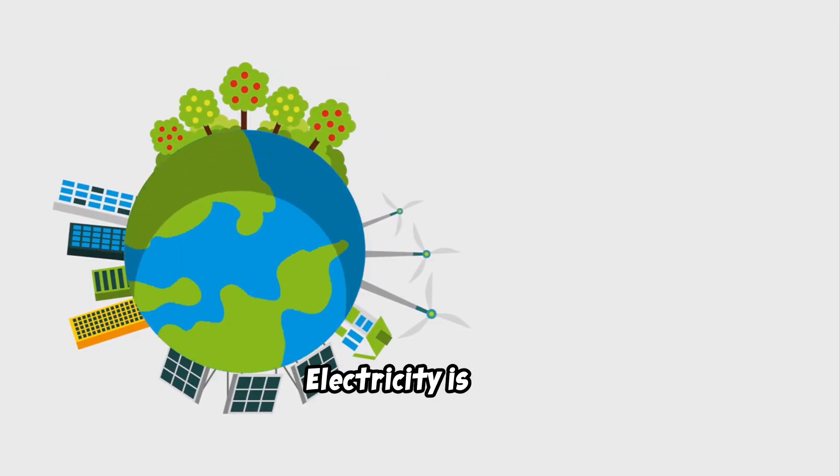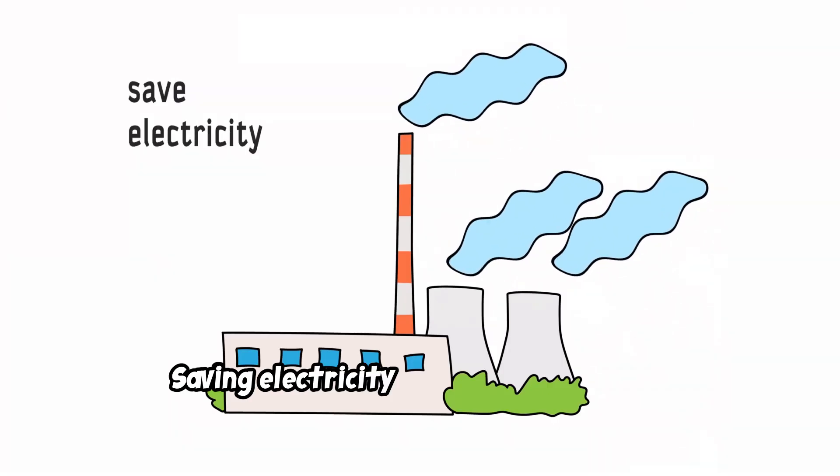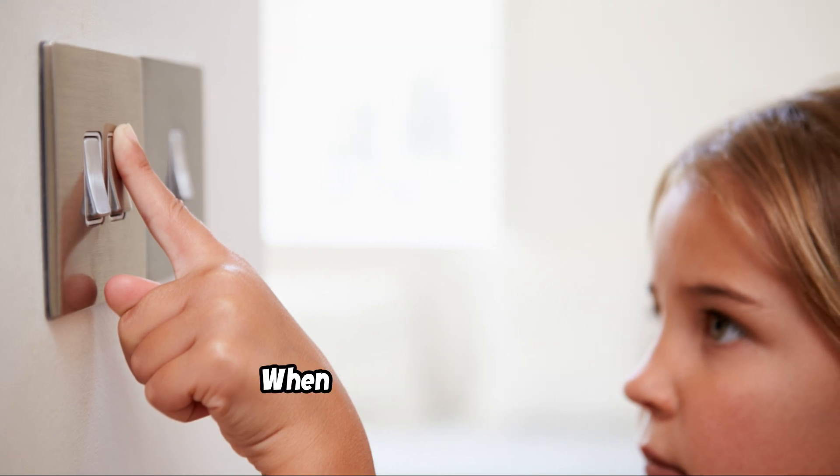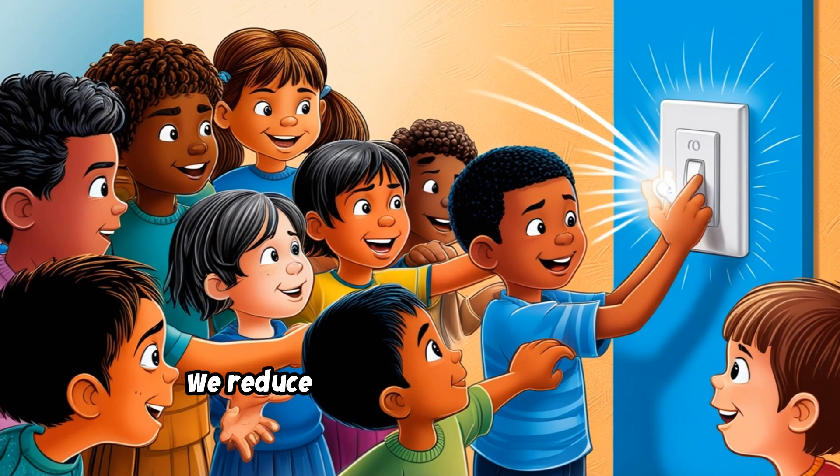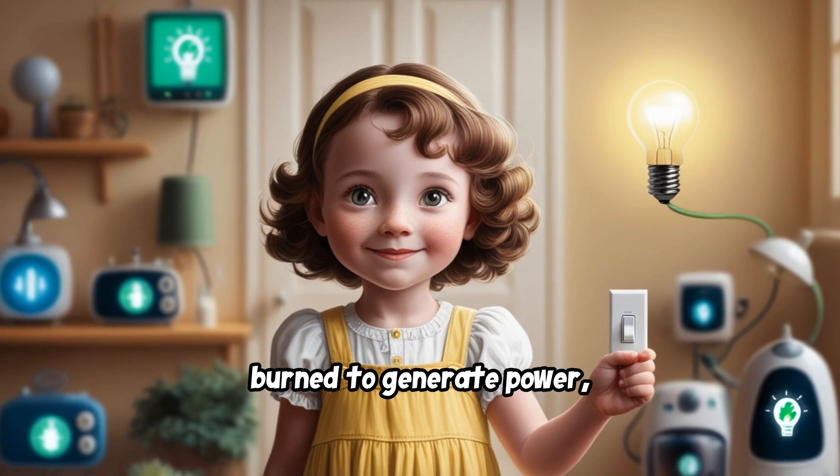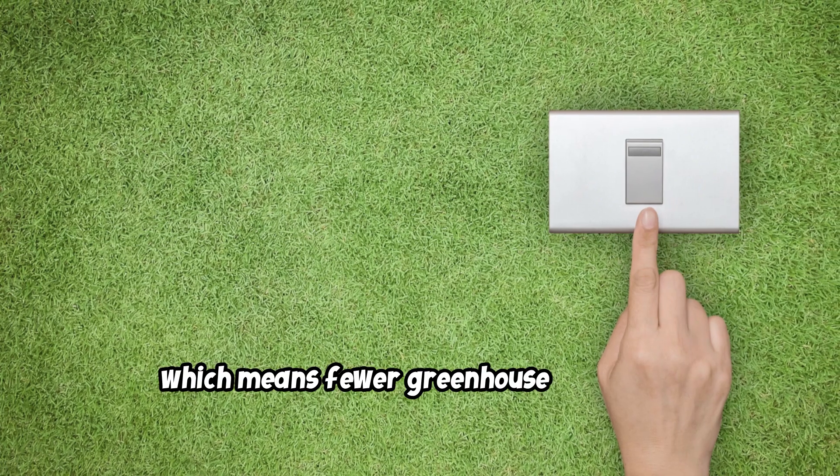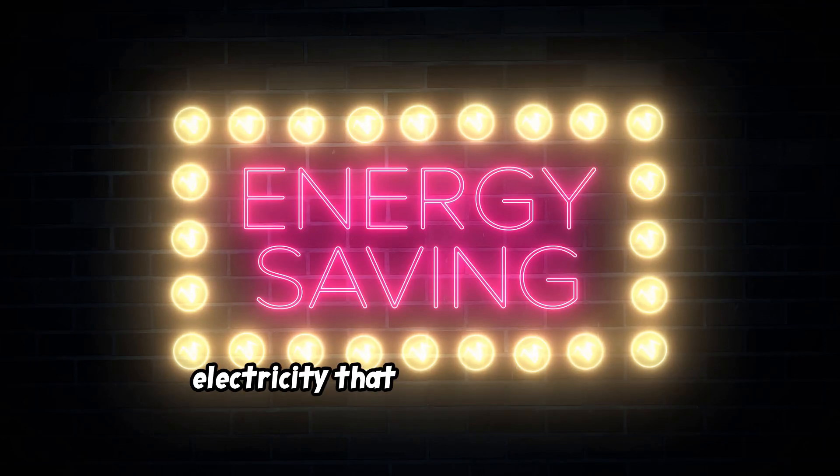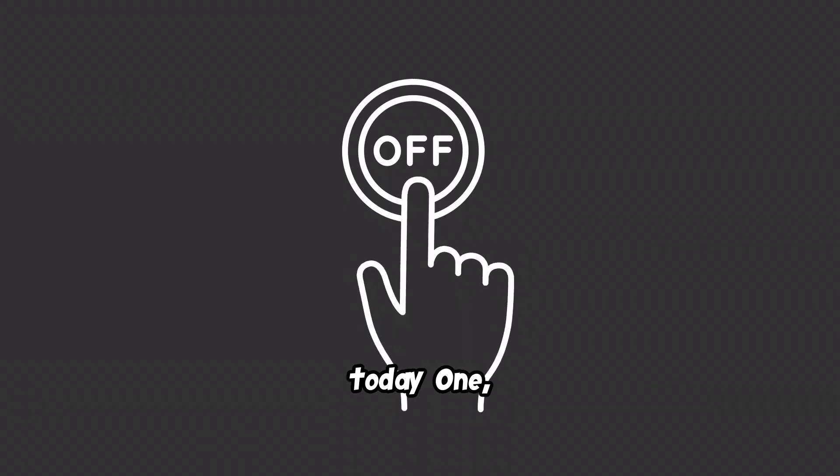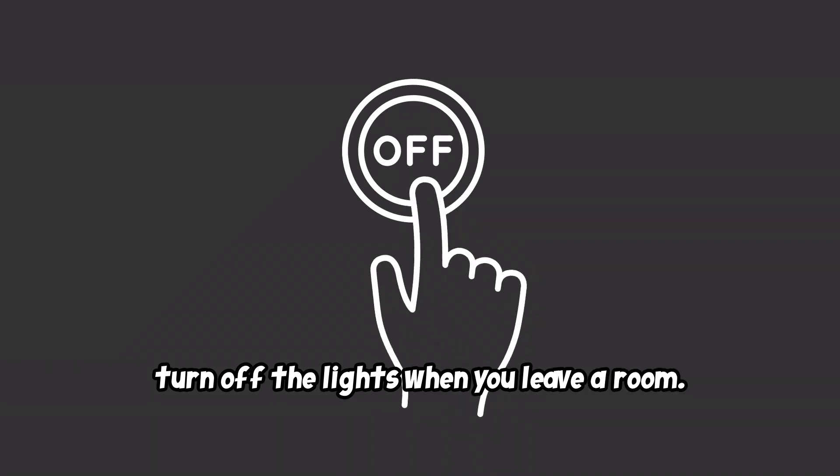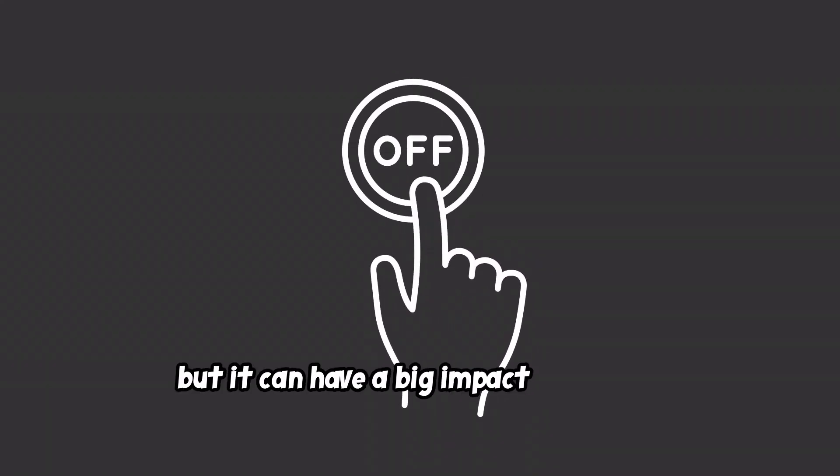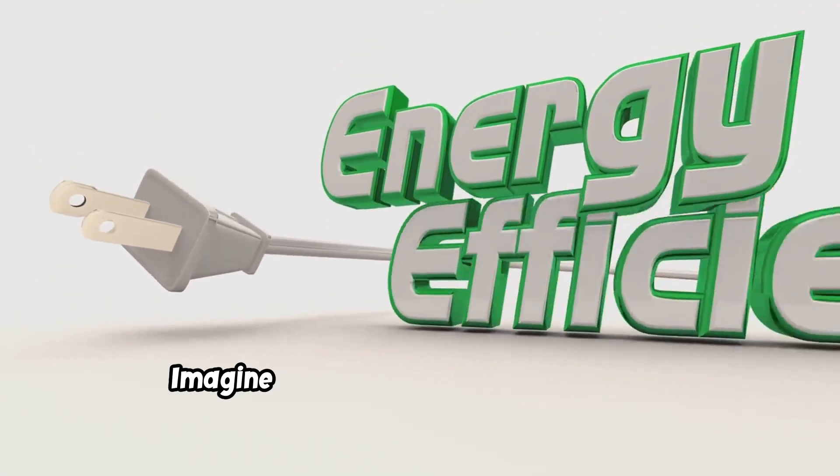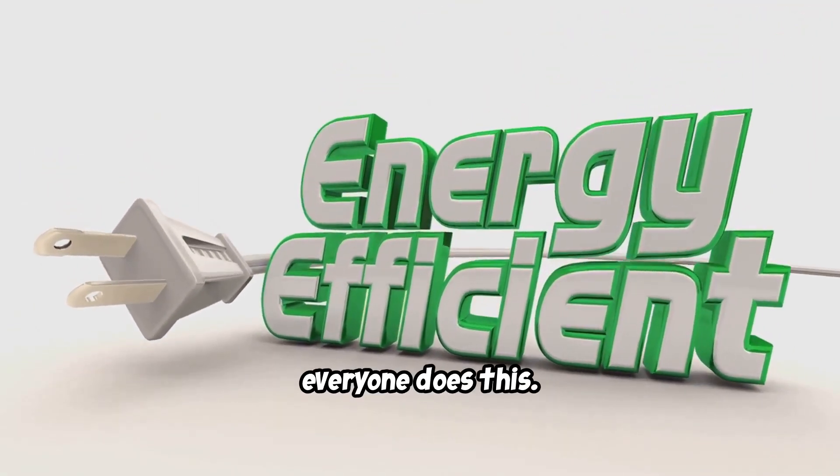Saving electricity is cool. Saving electricity is important because it helps us use less energy and protect our planet. When we save electricity, we reduce the amount of fossil fuels burned to generate power, which means fewer greenhouse gases are released into the atmosphere. Here are three simple ways to save electricity that you can start doing today. First, turn off the lights when you leave a room. It's a small action, but it can have a big impact over time. Even a few minutes can make a difference. Imagine how much energy we can save if everyone does this.